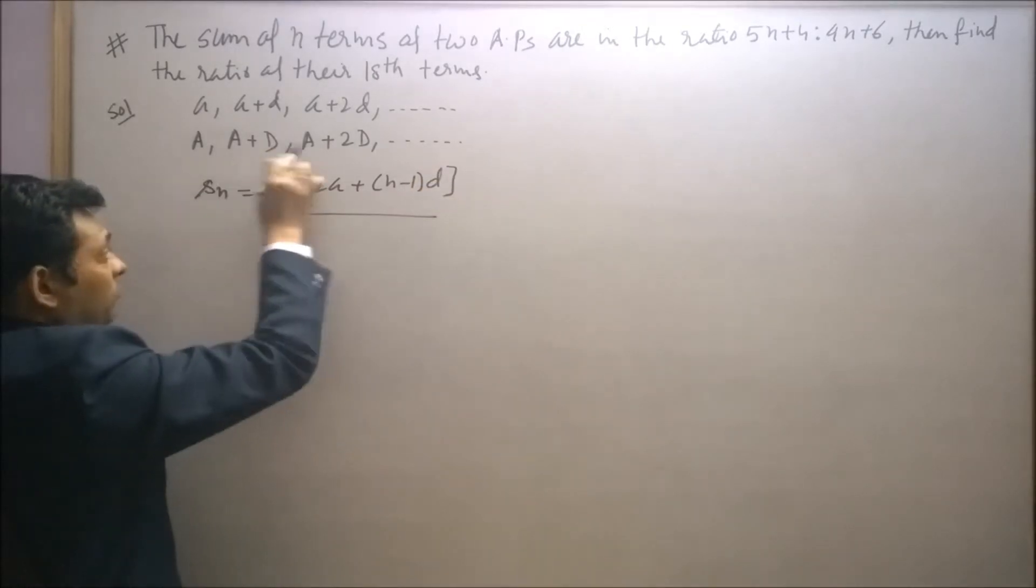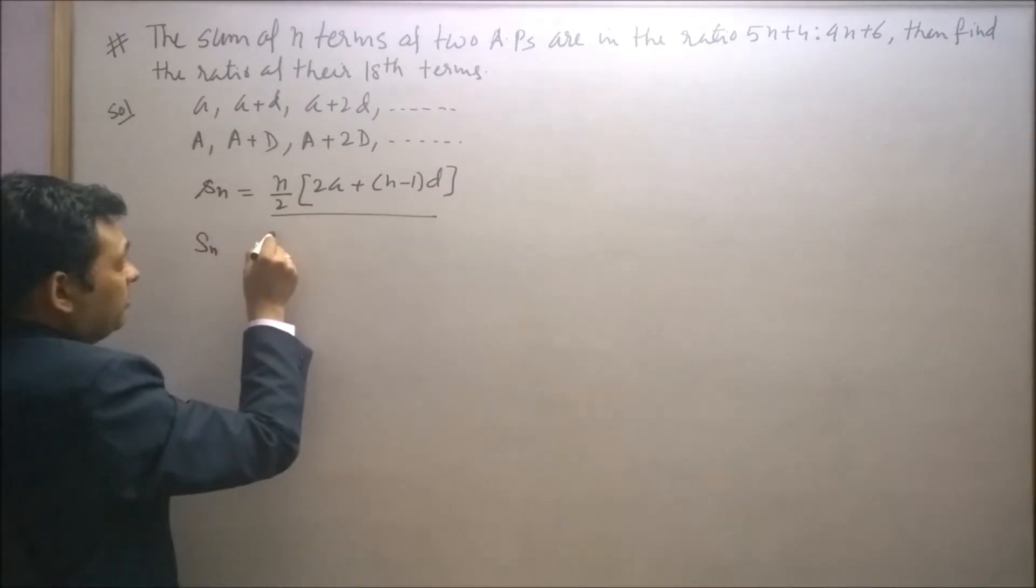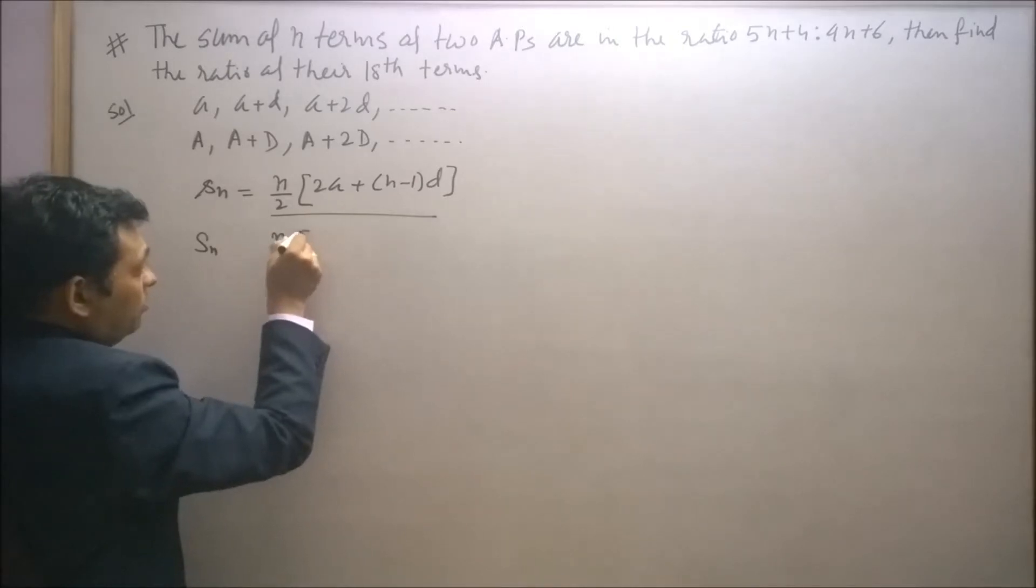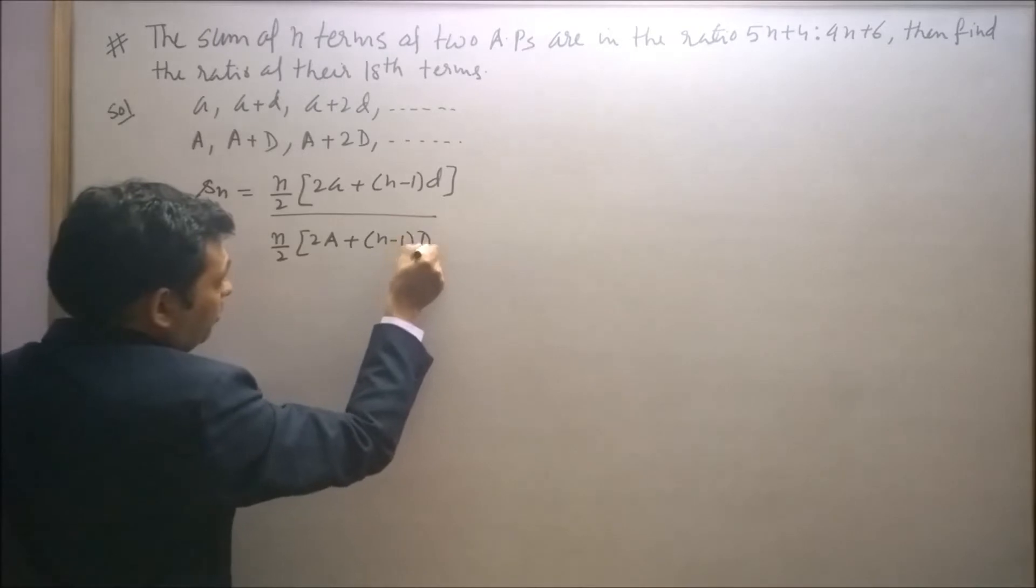And the sum of first n terms of this second AP will be denoted by capital S n. This will be n by 2 twice of capital A plus n minus 1 into capital D.